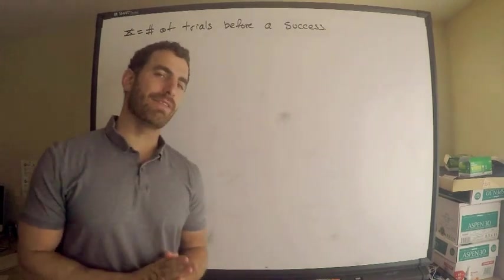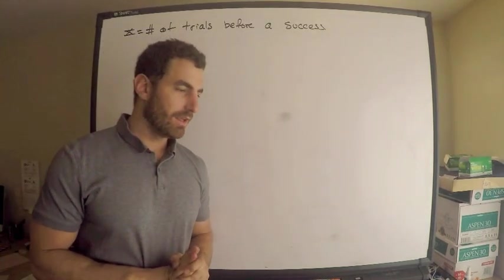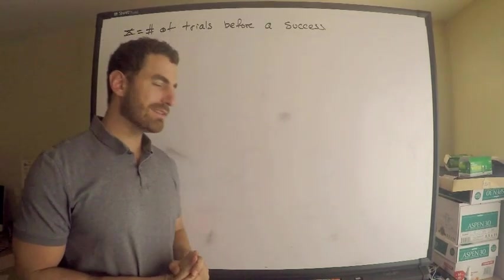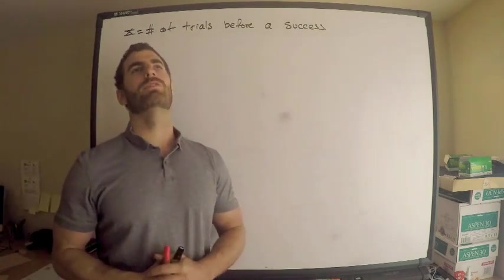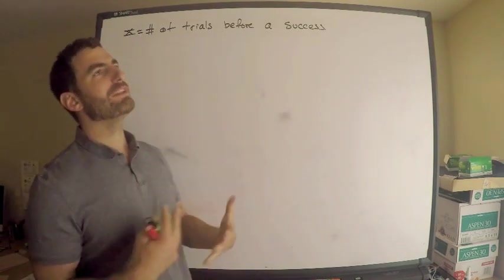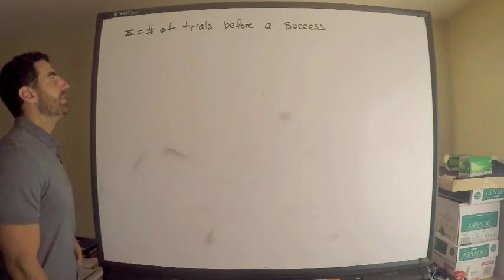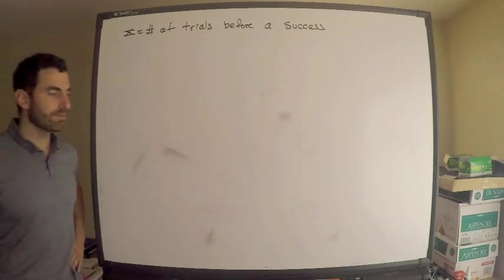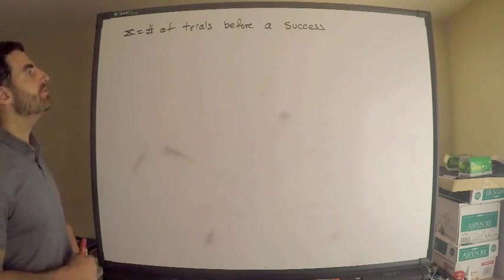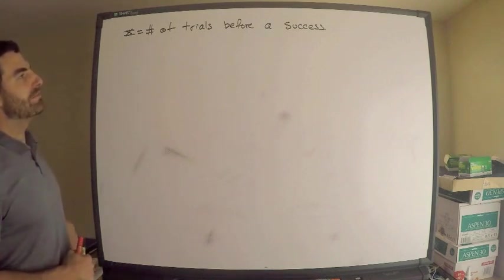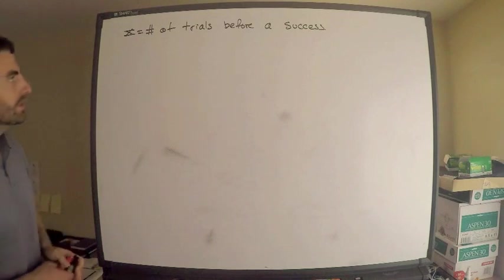Welcome to Mancinelli's Math Lab. Thank you for subscribing to my channel. This is not a requested topic, but I wanted to cover it and hopefully enlighten you. I want to discuss first: what is the moment generating function of the geometric random variable? I have it defined as follows — X is the number of trials before a success.